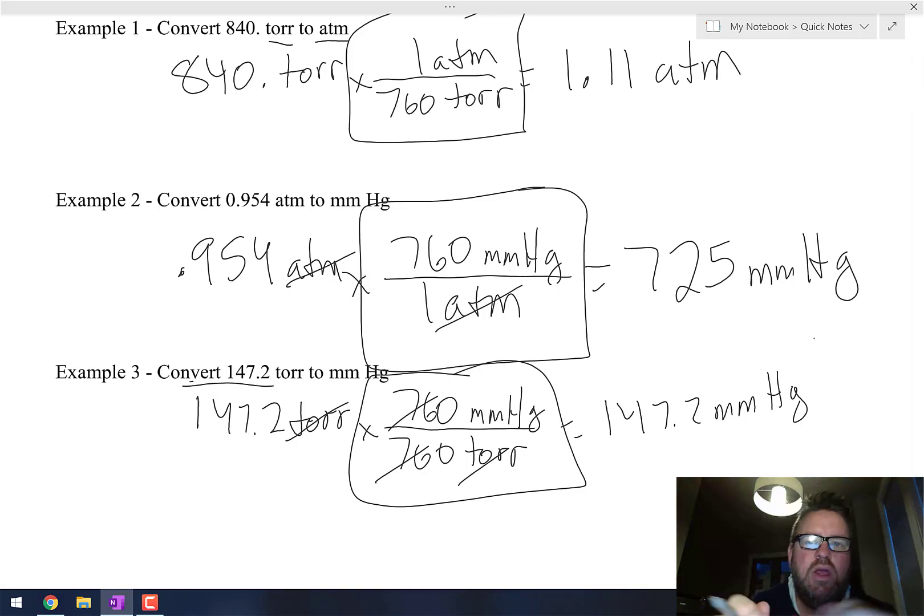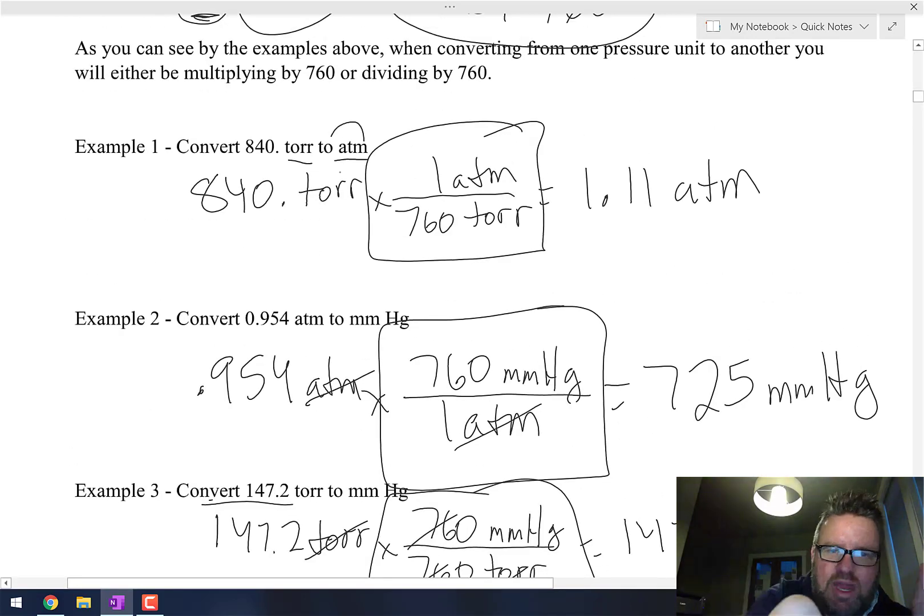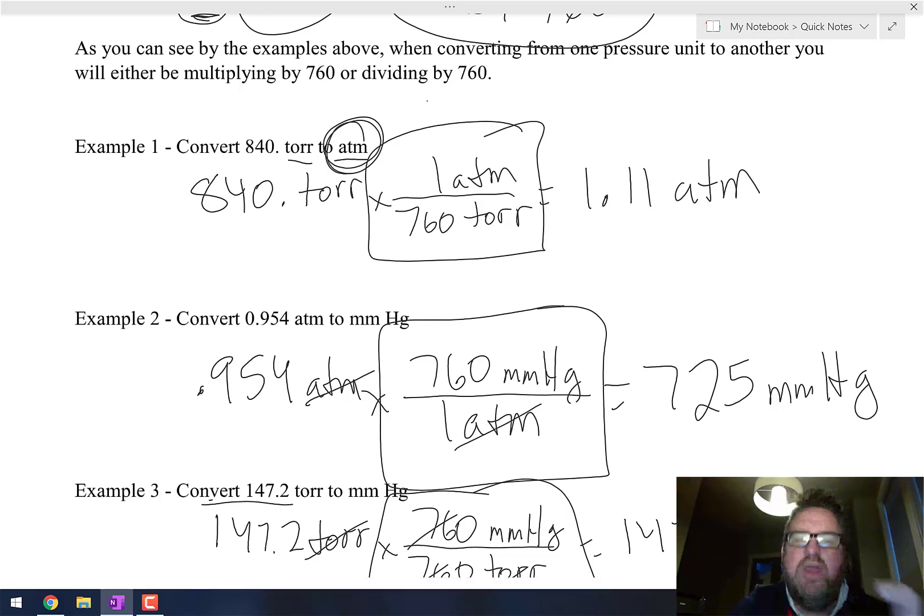In general, when you're doing these problems for the most part, you're going to be getting atmospheres. Usually I'm going to give you millimeters of mercury or torr to start with, and then you've got to convert to atmospheres, just like we did here in example number one.